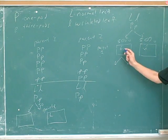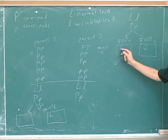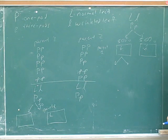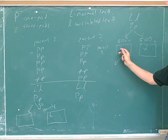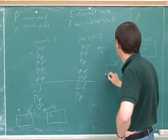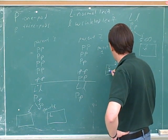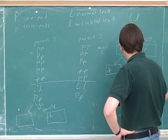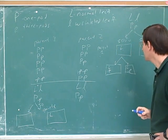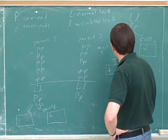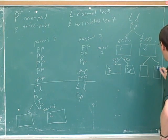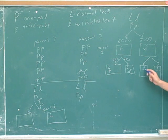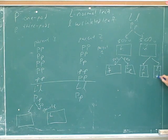Now suppose this is a gamete with a capital L. What are the odds that this gamete is also going to get the capital P? 50%. And what are the odds that this capital L gamete is going to get the lowercase p? 50%. What are the odds that a gamete with a lowercase l would have a capital P? 50%.